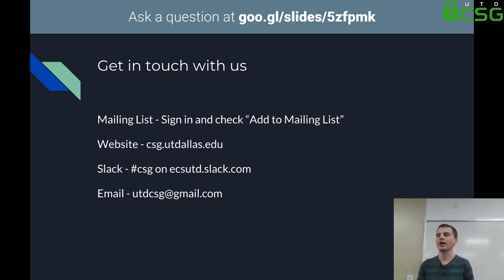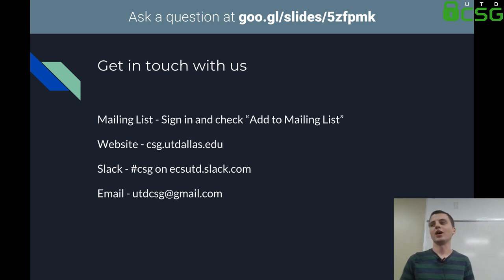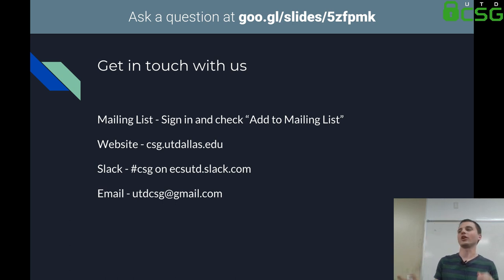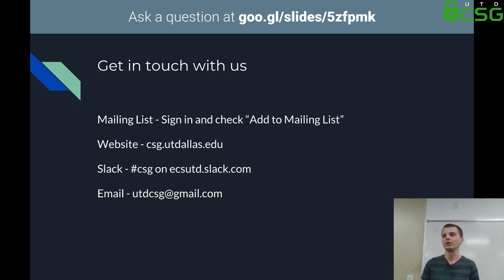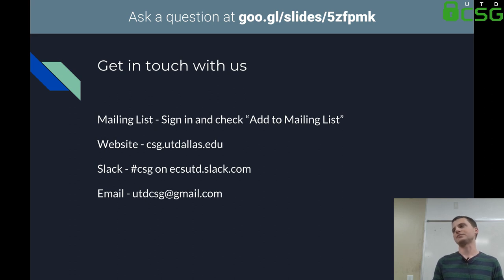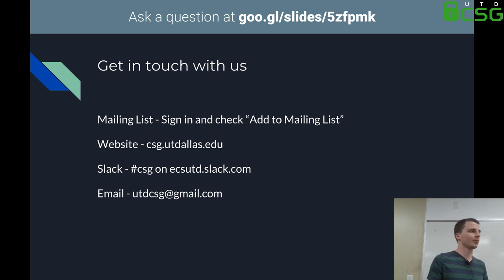Get in touch with us if you want to hang out, get to know us better, or give feedback. You can reach us at utdcsg@gmail.com. We also have a Slack channel, hashtag csg at ecsutd.slack.com, where various other student organizations have channels too. We have a website, csg.utdallas.edu, where all our information, slides, and videos are posted. And finally, our mailing list — sign in upfront and check 'add to mailing list' and we send out weekly emails about upcoming events.